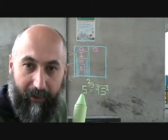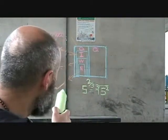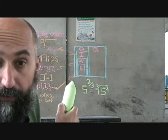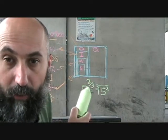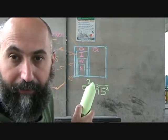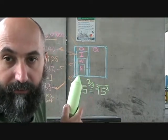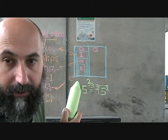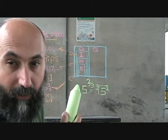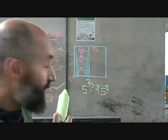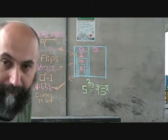We got 5 to the power of 2 over 3. The way it works is that the 3 in the denominator moves to the radical in front of the 5.